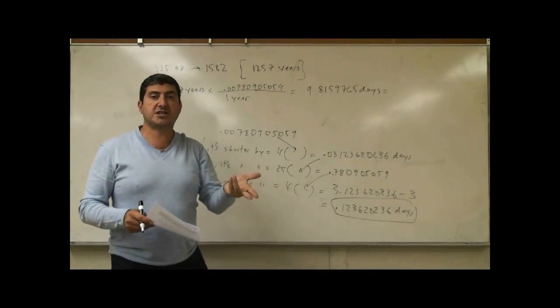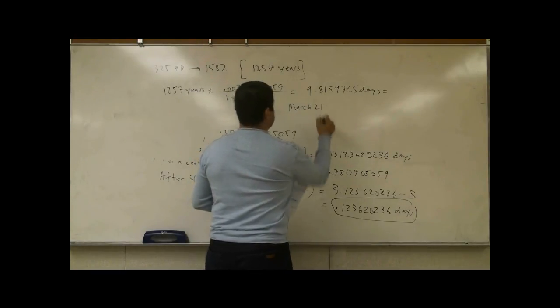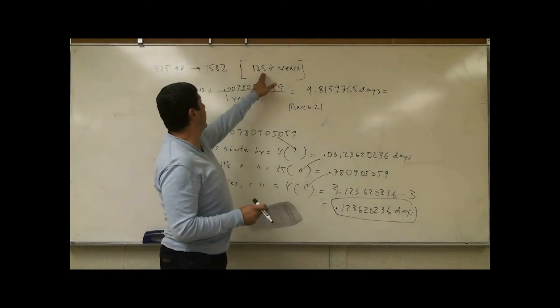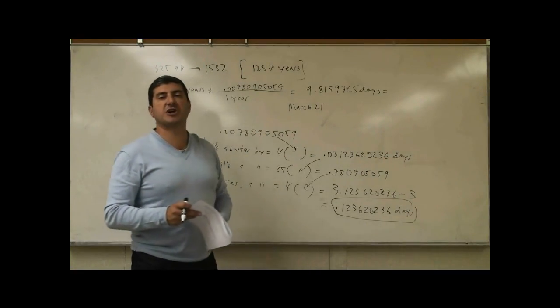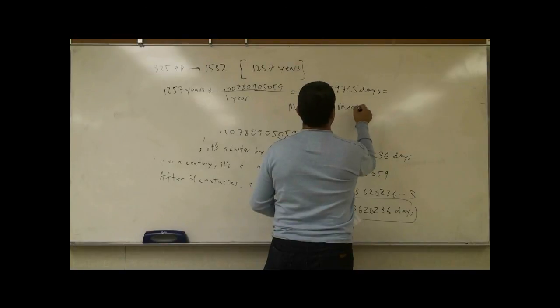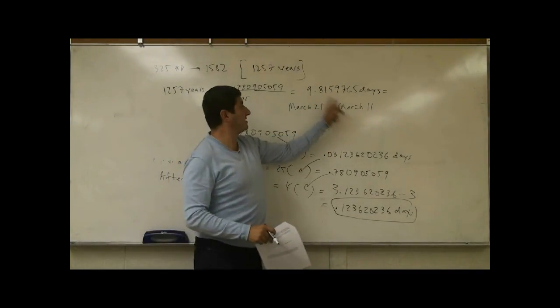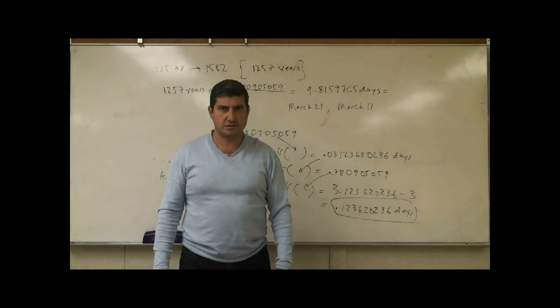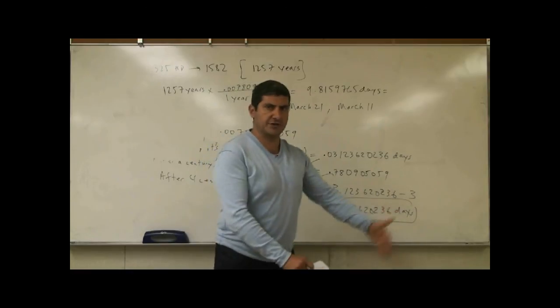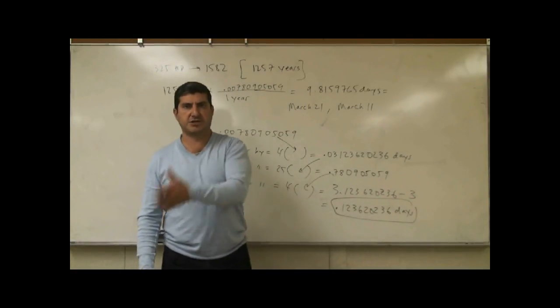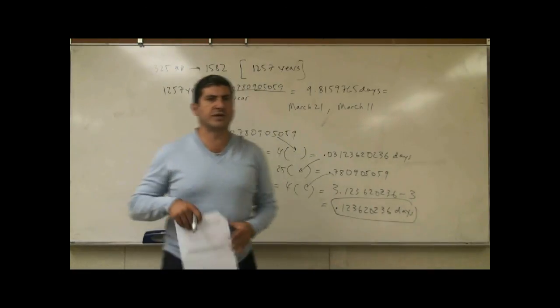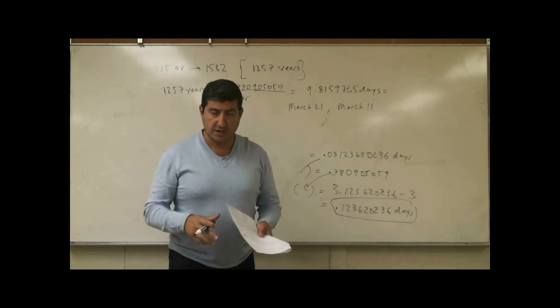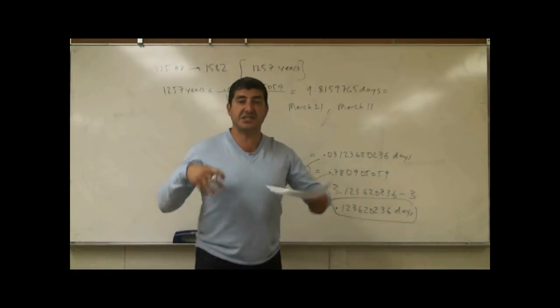And it became noticeable. What started happening was spring, instead of beginning March 21st, as it should have, constantly it should always be starting around March 21st. By that time, the 1500s, it was beginning March 11th or March 10th. So there was a difference of about 10 days. And so they noticed, wait a minute, spring is beginning March 11th, summer is beginning June 11th, winter is beginning December 11th. If this keeps going on another thousand years, everything will be shifted back another 10 days. We got to make a correction. So what happened was, Pope Gregory convened the council, and what they did is decide to skip 10 days in the calendar.